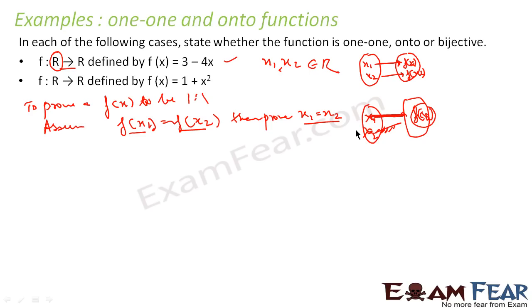To prove a function to be one-to-one, we assume f(x1) = f(x2) for any x1, x2 that are part of the real numbers in this case, and then we prove that x1 = x2.